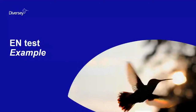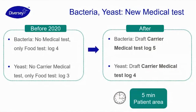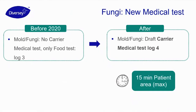Some examples of how the EN norms are evolving and what the future holds: before 2020, there were no medical tests for bacteria — only food tests for the FD area — and the same for yeast, with no carrier medical tests available. Now there is a draft for bacteria carrier medical tests, and the same for yeast. For fungi, before there was no surface test for medical area, only for FD, but now a draft is available and is expected to be published soon.